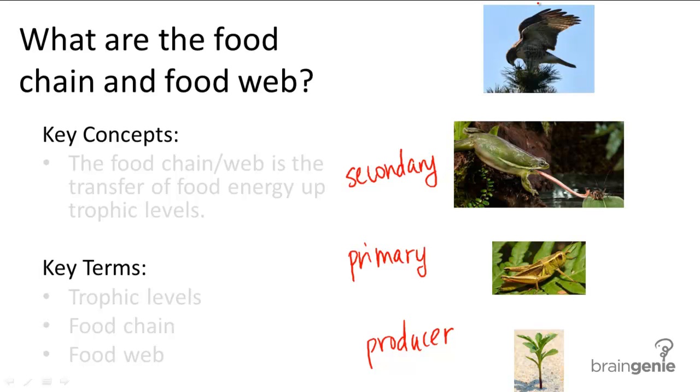And consumers that eat secondary consumers are called tertiary consumers. So theoretically, you can have more consumers above tertiary consumers, but generally an ecosystem stops at the tertiary level and you will understand why when you learn about energy flow.